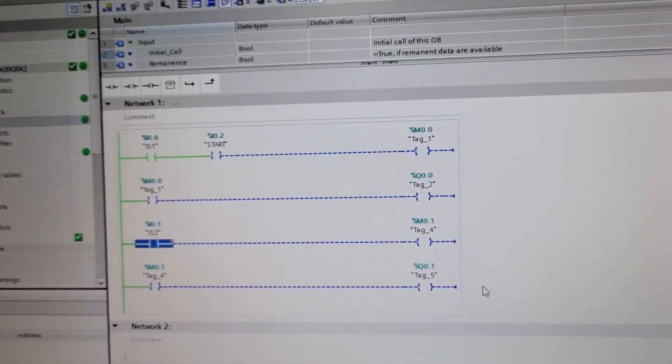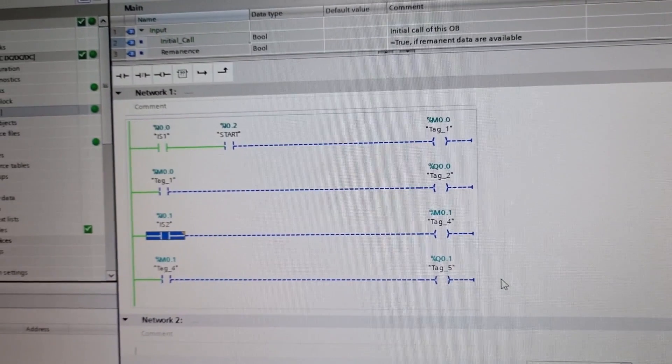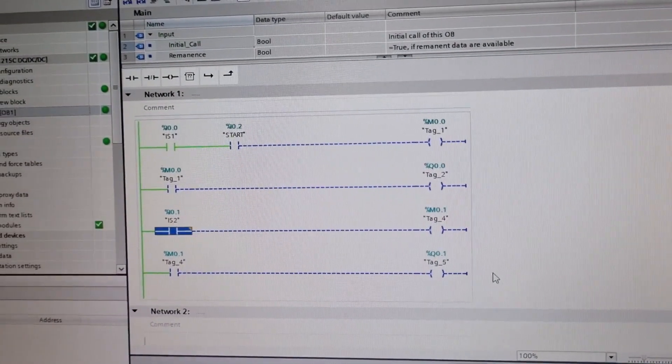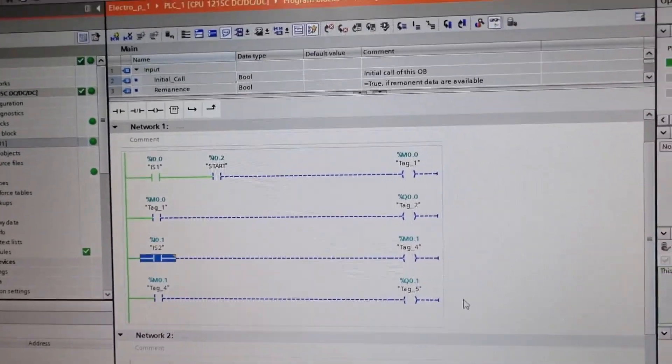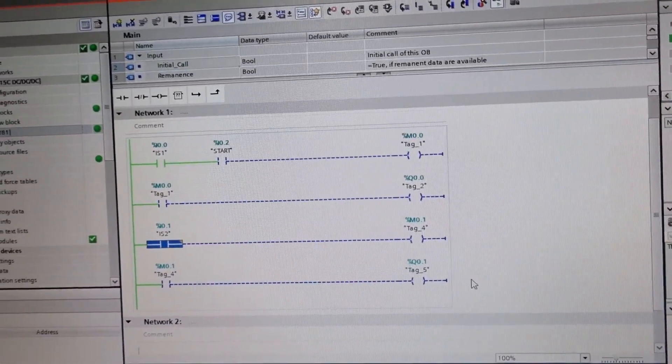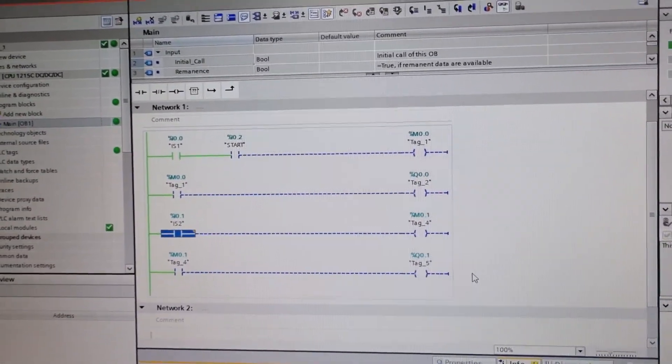This is for one cycle of operation. Because we are using a start button as an on-off switch, when we turn it on, it will continuously do the cyclic operation of the double acting cylinder. Now we will move to the hardware setup.